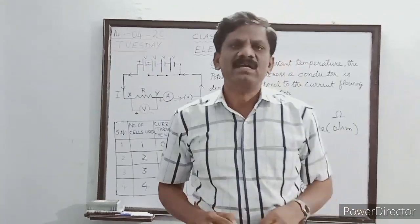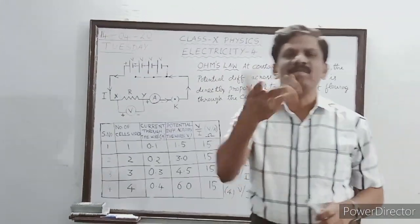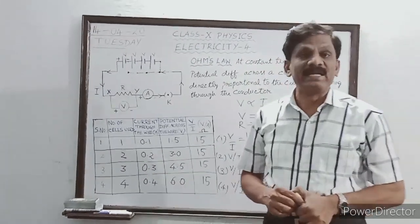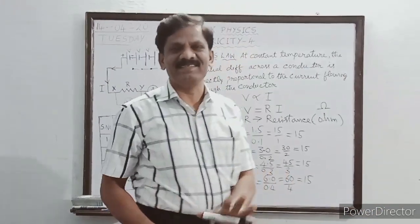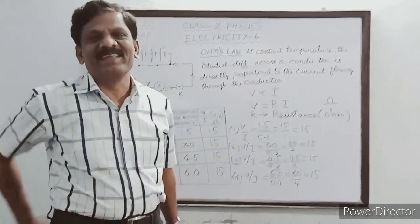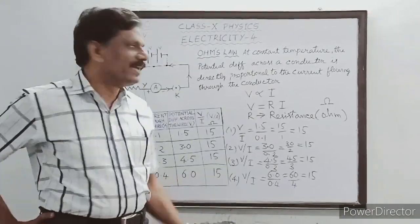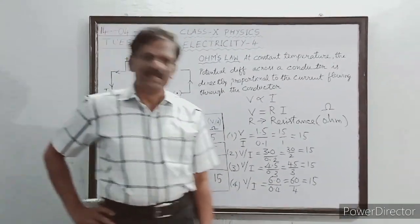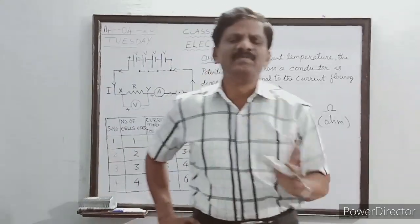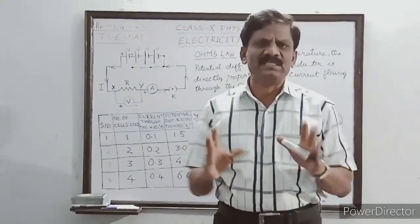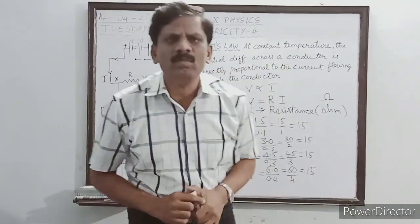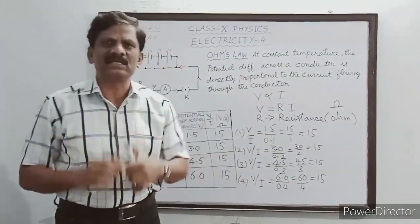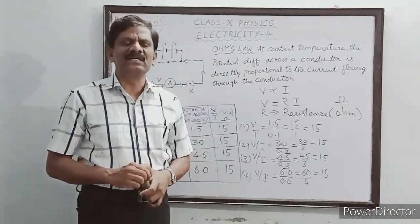Now I am going to explain why we have to mention the temperature. Resistance means opposition to the flow of electrons. We have discussed many times that the basic cause of current in a conductor is the free electrons.